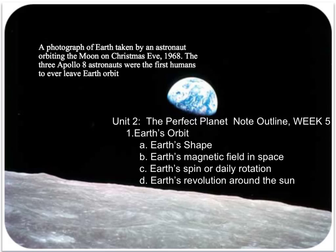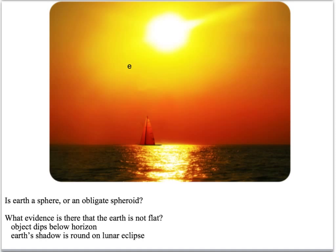So let's start digging into Earth's orbit. First of all, let's talk about the shape of the Earth. Is the Earth a perfect sphere, or is it an oblate spheroid, which means it's a little bit more like an oval or egg shape? Well, actually, Earth is a little bit of an oblate spheroid. The reason for that is that as the Earth rotates on its axis, it tends to bulge out at the equator, so the equator is a little bit wider than it is from north to south.